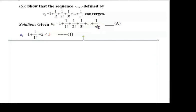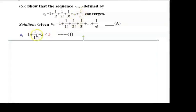We will show that aₙ is bounded above, proved using mathematical induction. Let us take a₁: when n = 1, aₙ = 1 + 1/1! = 1 + 1 = 2. We want to show that |a₁| is less than some real number for all n in ℕ.